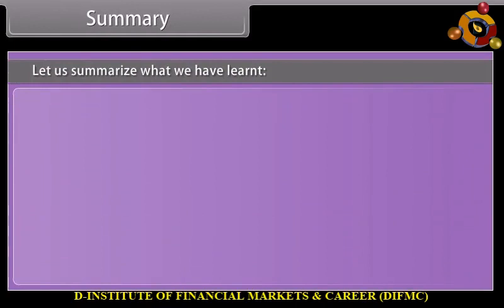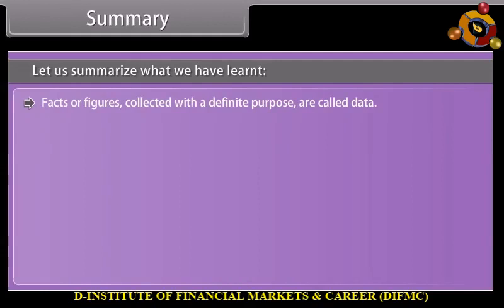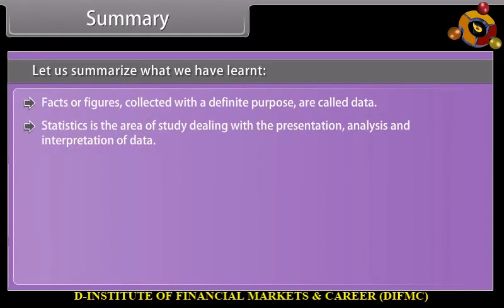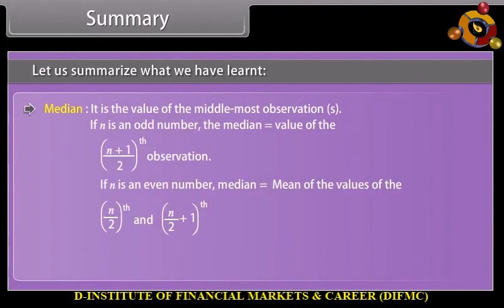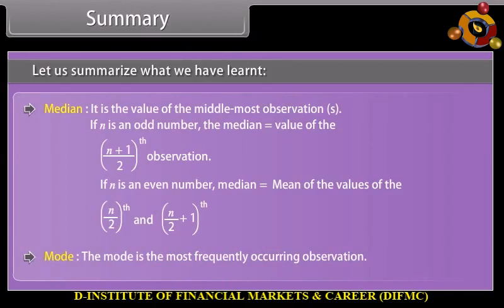Summary: Facts or figures collected with a definite purpose are called data. Statistics is the area of study dealing with the presentation, analysis, and interpretation of data. The three measures of central tendency for ungrouped data are: Mean — found by adding all values and dividing by the total number of observations, denoted by x̄. Median — the middlemost value; if n is odd, it equals the ((n+1)/2)th observation; if n is even, it equals the mean of the (n/2)th and (n/2+1)th observations. Mode — the most frequently occurring observation.